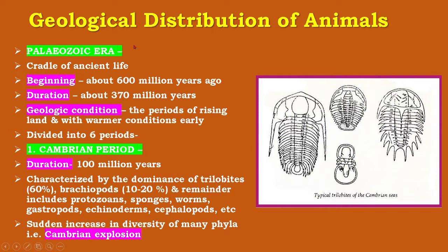The Paleozoic era is commonly known as the cradle of ancient life. It began about 600 million years ago and its duration was about 370 million years. Geological conditions were periods of rising land and warmer conditions. The Paleozoic era is divided into six periods — a very important era — in which all the major invertebrate phyla are represented, and fossils of the first vertebrates appeared late in this era.